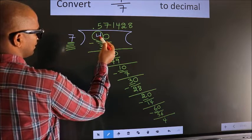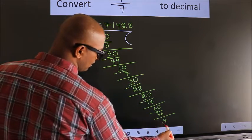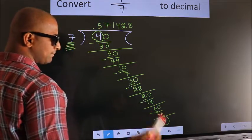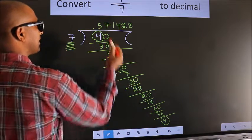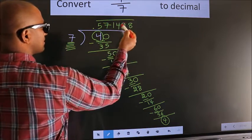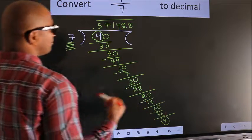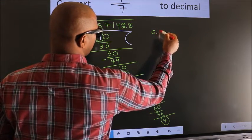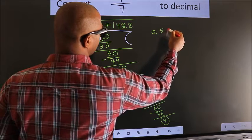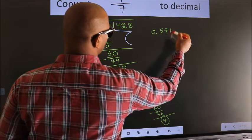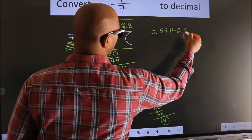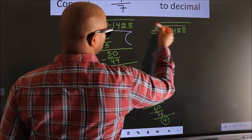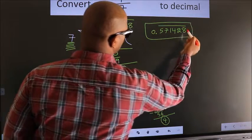Here we observe that we originally had 4 and we got 4 again. That means we get a bar on these repeating numbers. Therefore our answer is 0.571428 with a bar on these numbers. This is our answer.